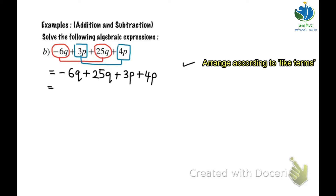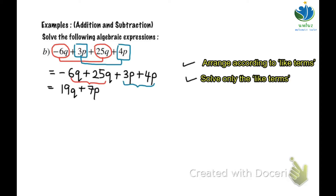Second, solve only the like terms. So negative 6q plus 25q is equal to 19q. And 3p plus 4p is positive 7p. So now this is the last answer. You can also give the answer according to alphabet, meaning you can also write the answer as 7p plus 19q.